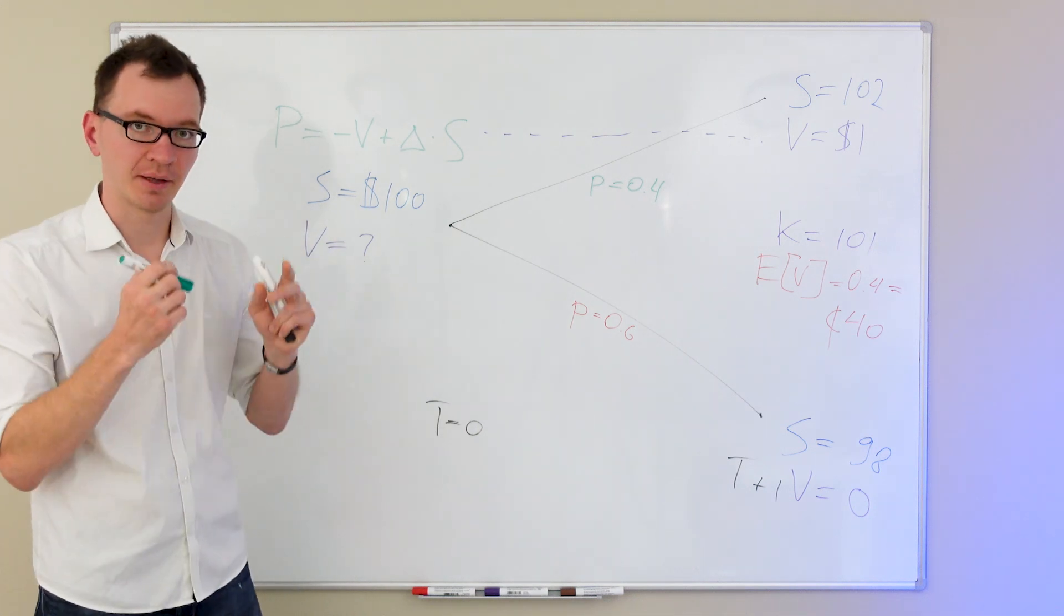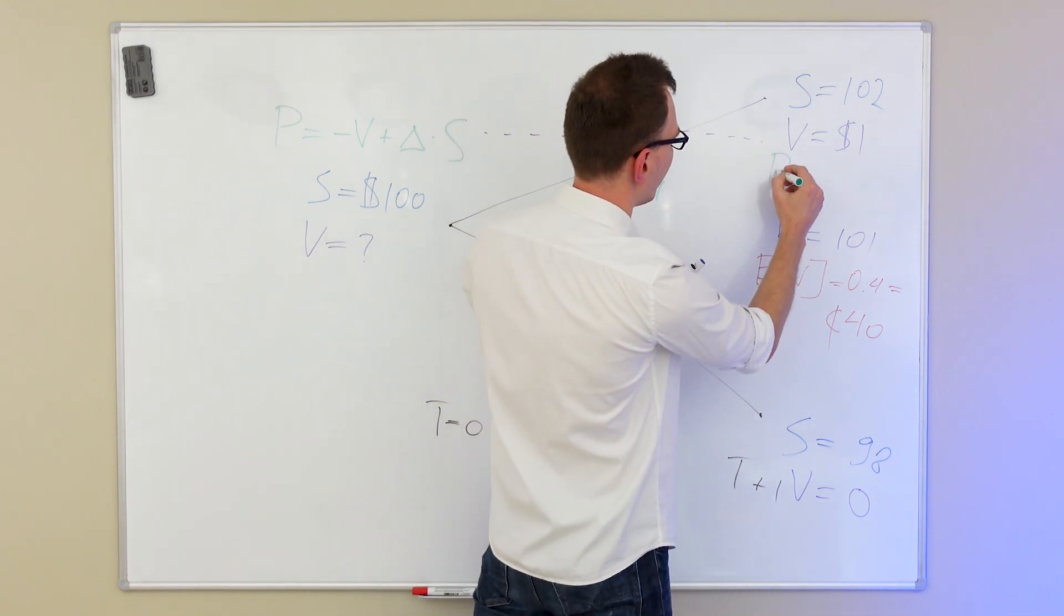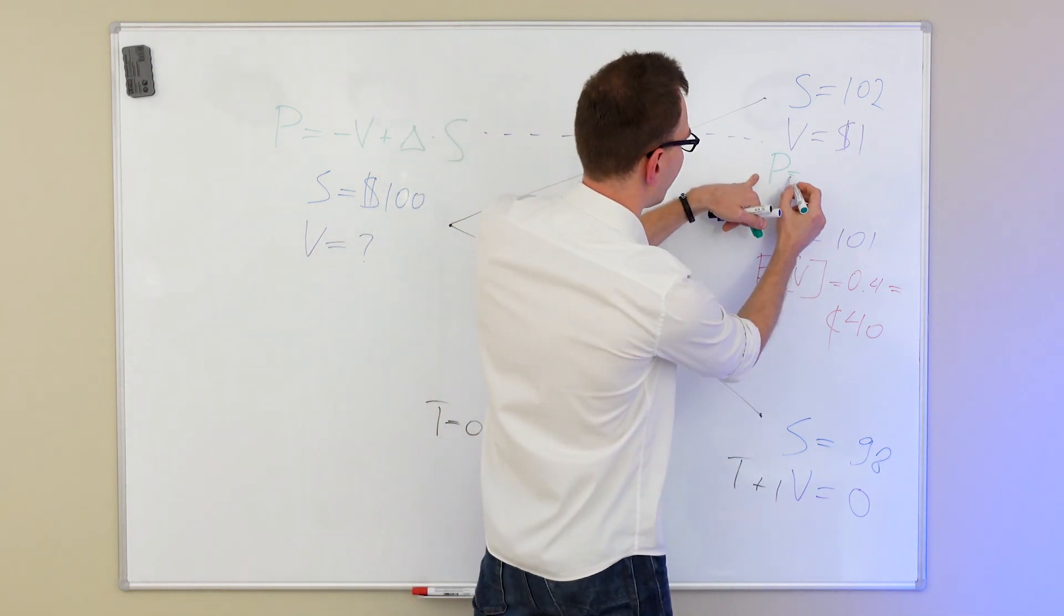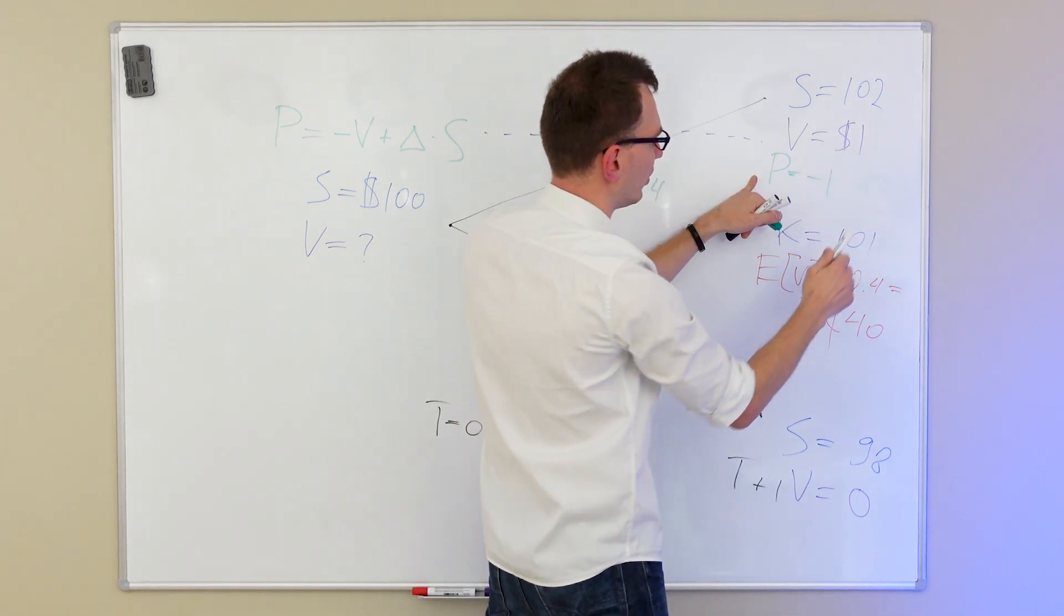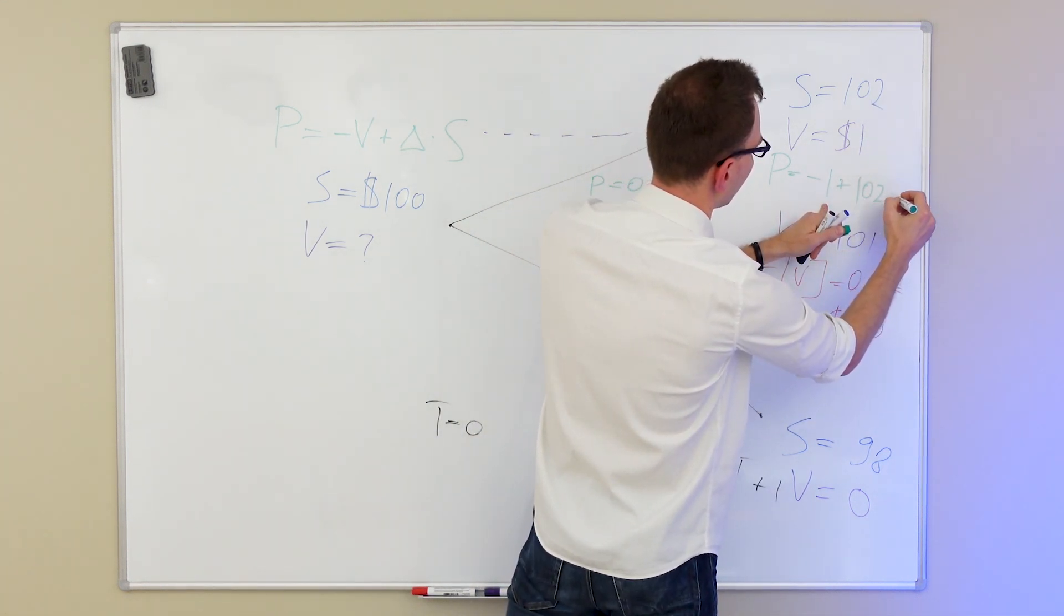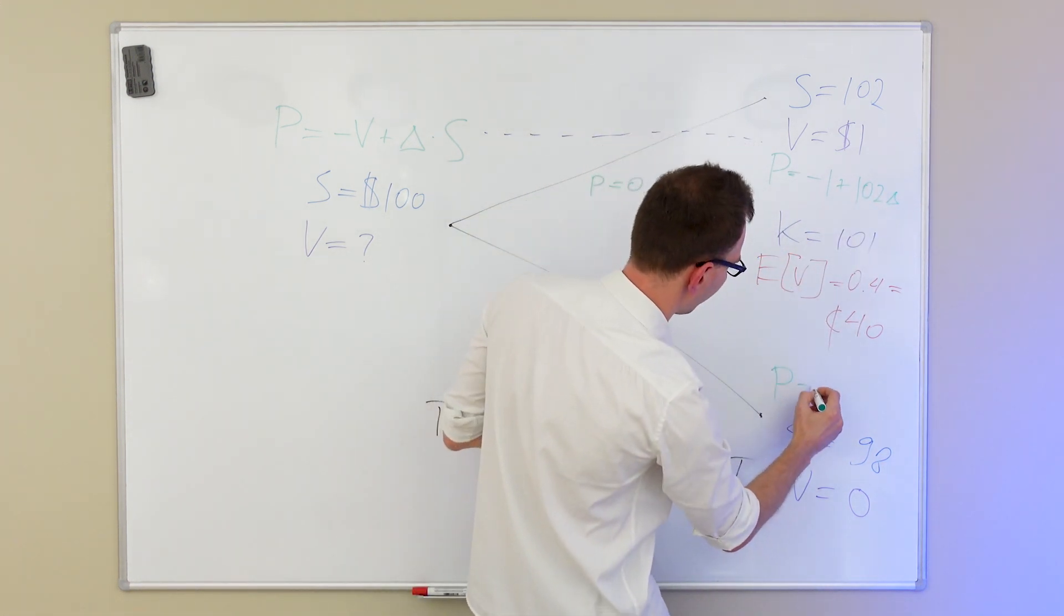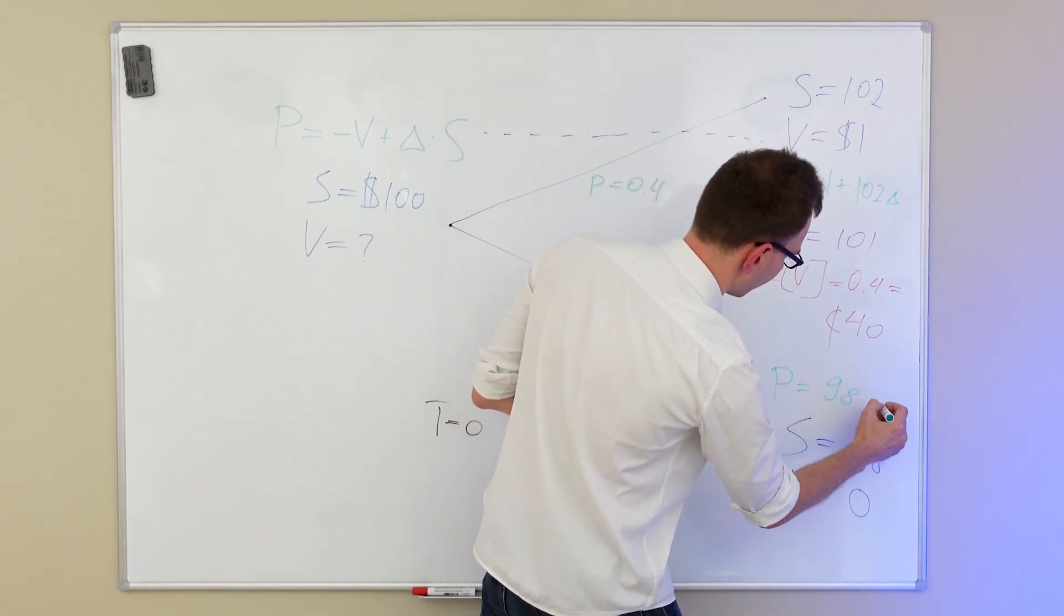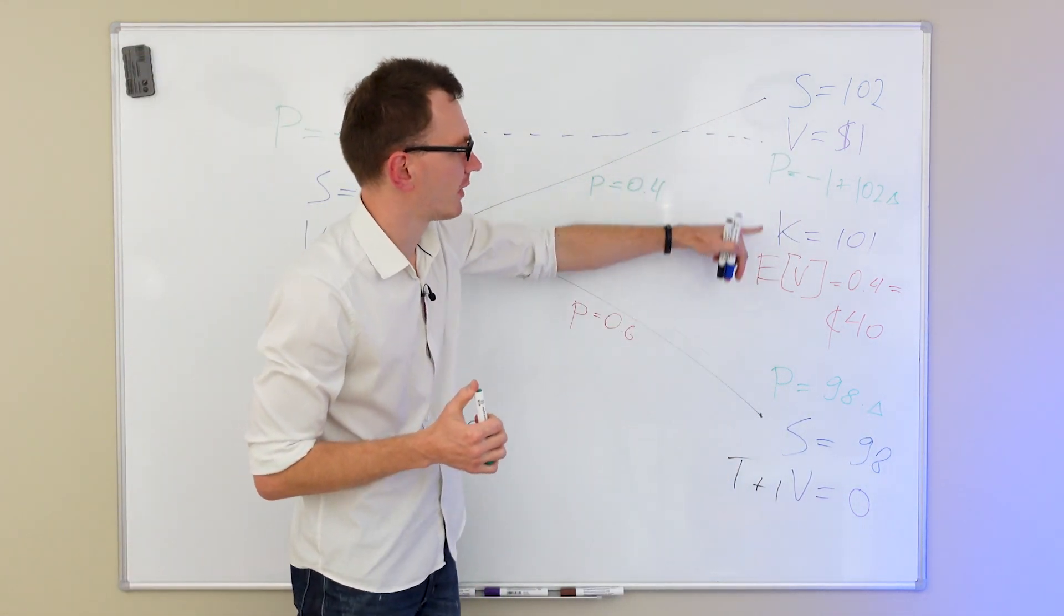Now this portfolio consists of two unknowns. We don't know delta. We don't know V. Can we find them out? Well, actually we can. And we do that by going to this T plus 1 state and saying, we actually know our portfolio value in this and in this case. What is our portfolio if the stock goes up? Well, the portfolio is going to consist of an option. So option is worth one dollar. So that's minus one. Plus the share price is 102 times delta. Delta, we don't know. If the stock price goes down, then the portfolio value is going to be, the option is zero and the share price is 98 times delta.